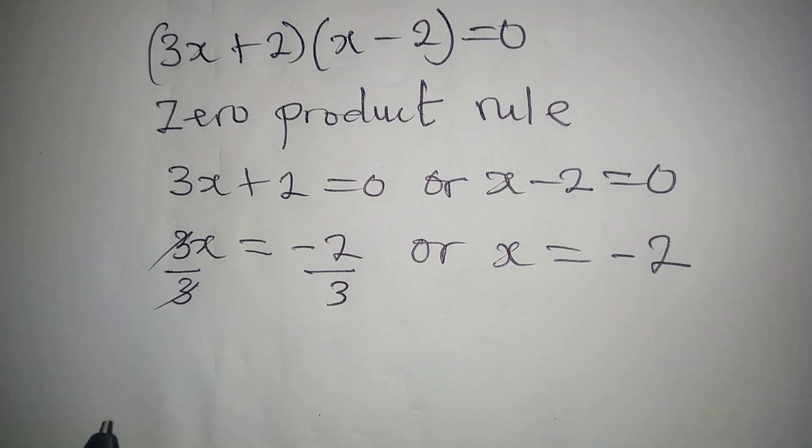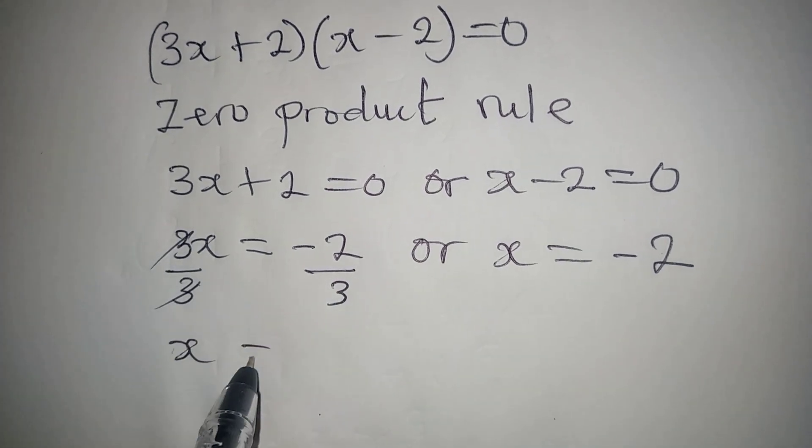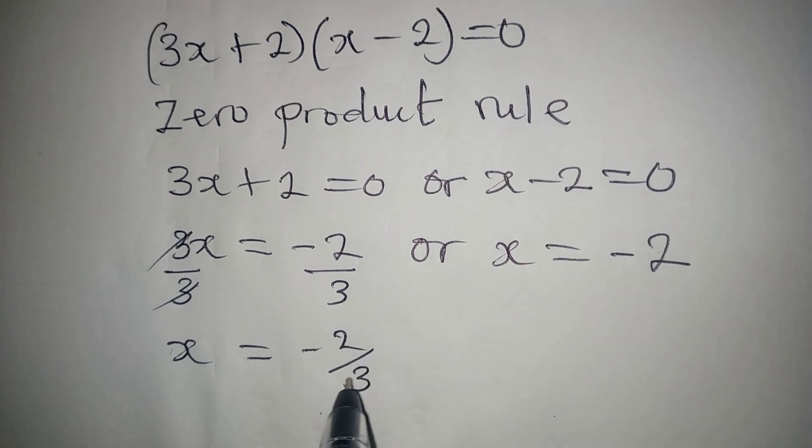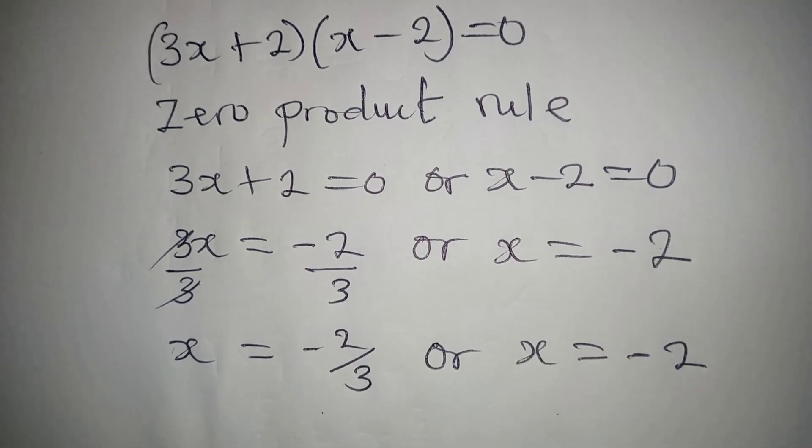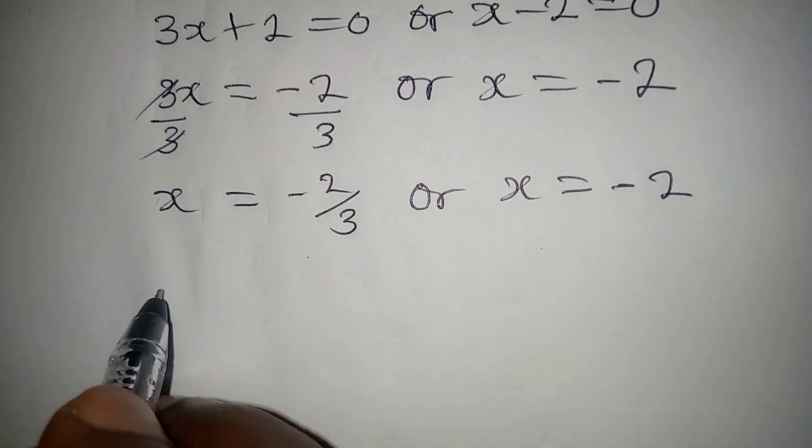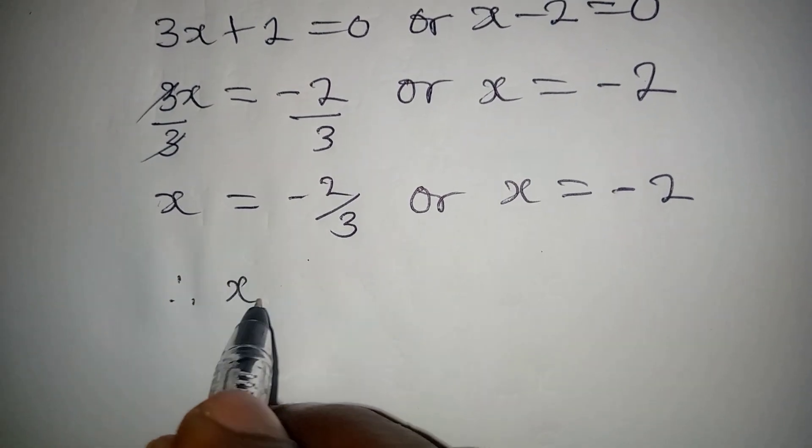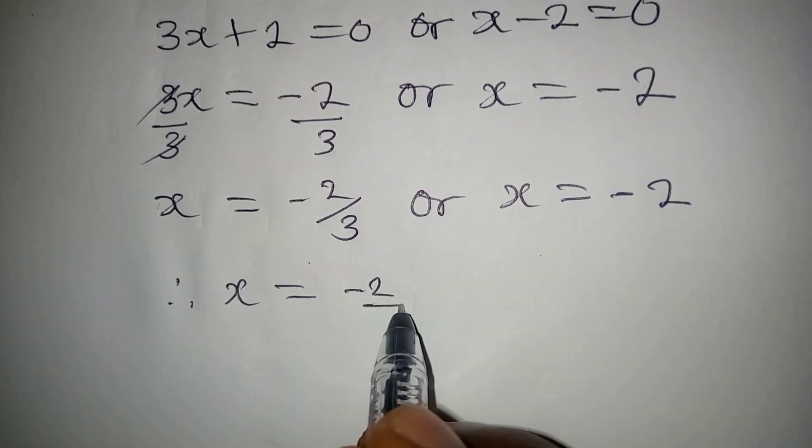So that this goes with this, as we have x to be equal to minus 2 over 3, or x to be equal to minus 2. But then this means that x is equal to minus 2 over 3 or minus 2.